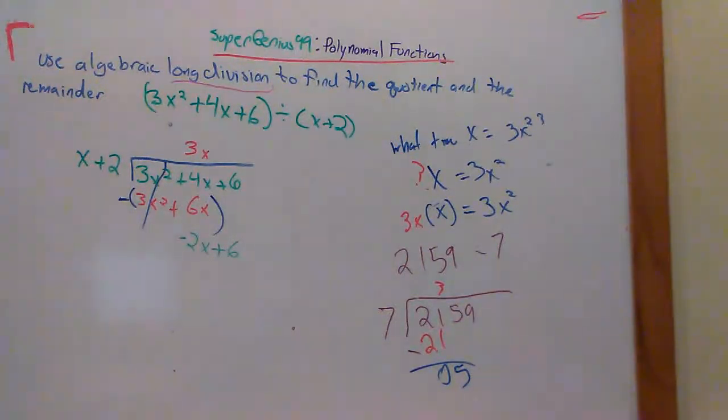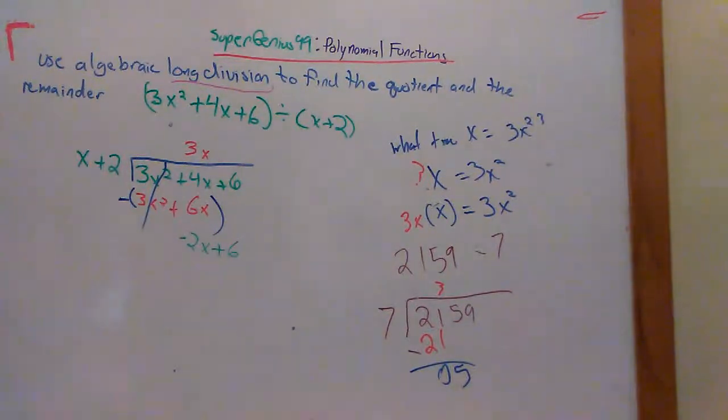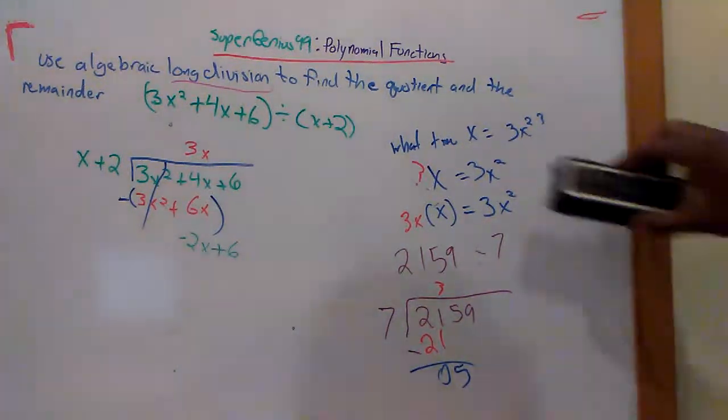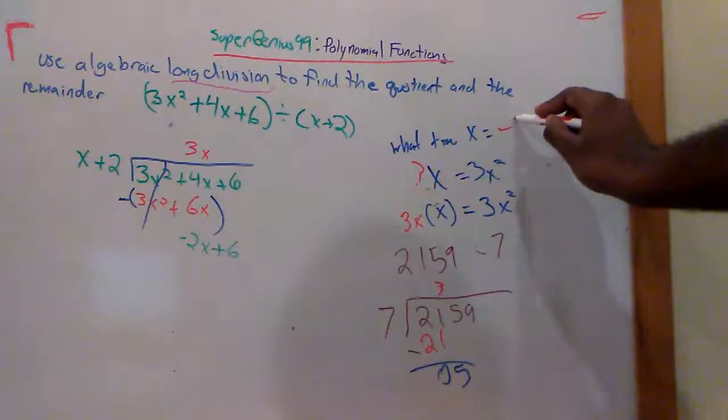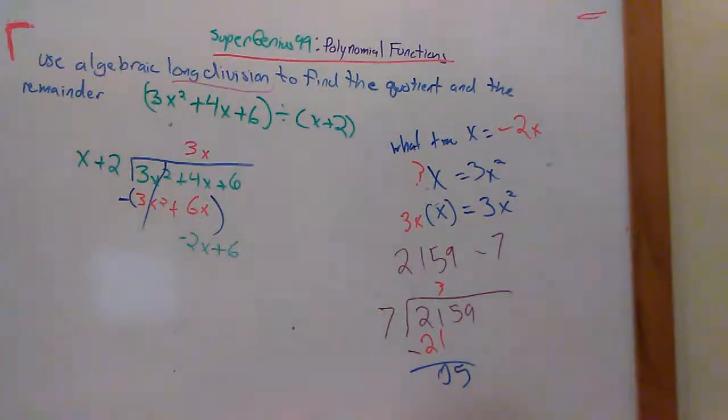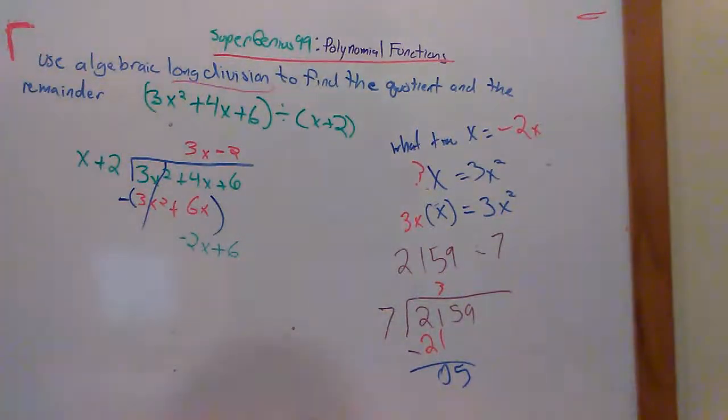Some people get confused. You're doing the same thing. There's just letters here. Don't let the letters throw you off. Same process. You ask yourself, how many times is x going into negative 2x? Or what times x equals negative 2x? What do I need to multiply x by to get me negative 2x? I need to multiply x by a negative 2.